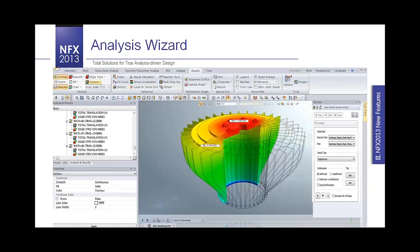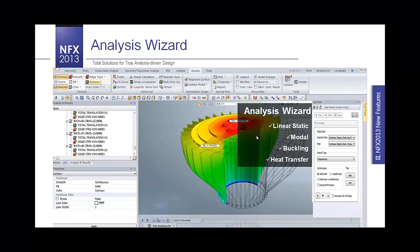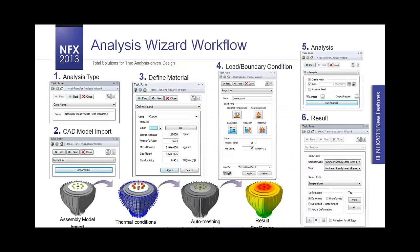A second new feature for CAD designers is the analysis wizard, added to make the analysis process simpler for people learning the software. It is available for linear static, modal, buckling, and heat transfer analysis. By following just six steps — defining your analysis type, importing your CAD model, defining the material, defining the load and boundary conditions, running the analysis, and getting results — it's very easy to get analysis done.